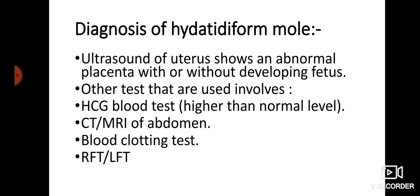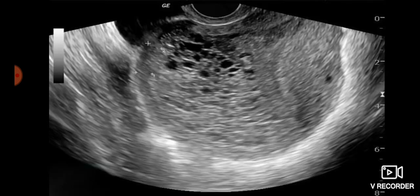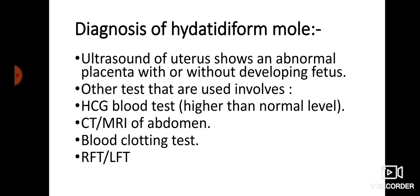Diagnosis of hydatidiform mole — ultrasound of uterus shows an abnormal placenta with or without a developing fetus, जैसे कि हम पहले images में देख चुके हैं। Other tests जो हम use कर सकते हैं: HCG blood test — जो normally higher होगा — CT, MRI of the abdomen, blood clotting test, RFT यानि renal function test, और liver function test of the woman।